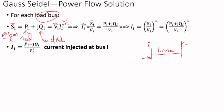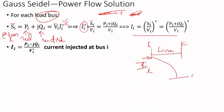If you solve for P plus jQ divided by V, then take the conjugate of both sides, the conjugate of a conjugate cancels out — like a double negative — so you get the equation for injected current. The current injected at bus i can branch out to multiple buses through different lines, following KCL, so some current flows through this line, some through another.